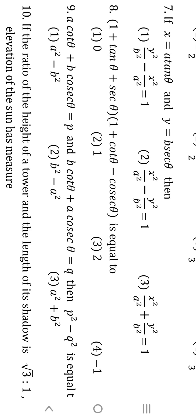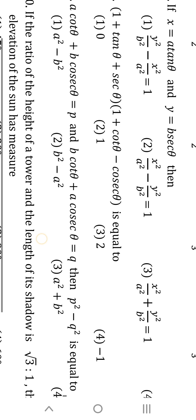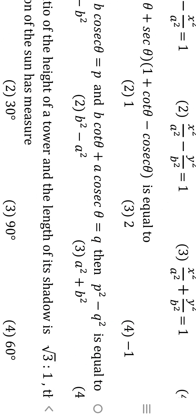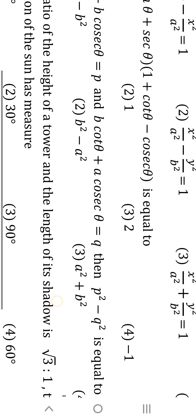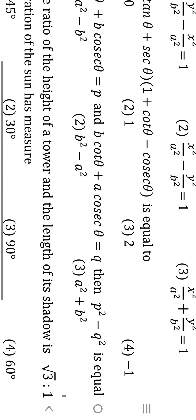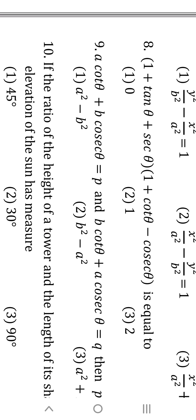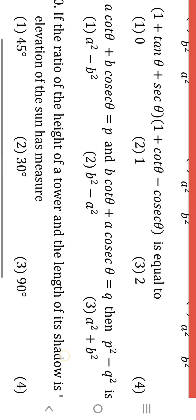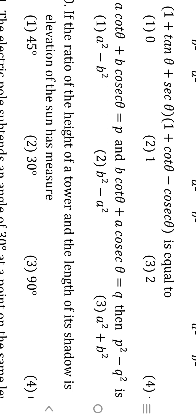Ninth question: a·cosθ + b·sinθ = p, and b·cosθ + a·sinθ = q. Then p² - q² is equal to b² - a². Carefully note: p² minus q² — p equals b, q equals a — so b² minus a² is the answer.